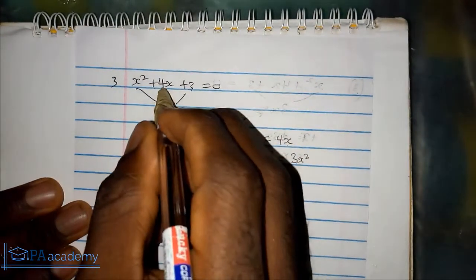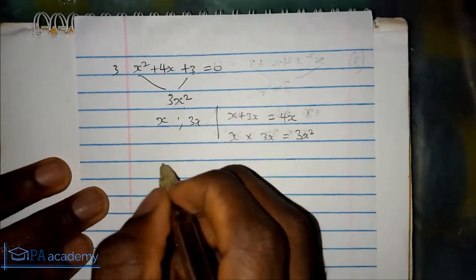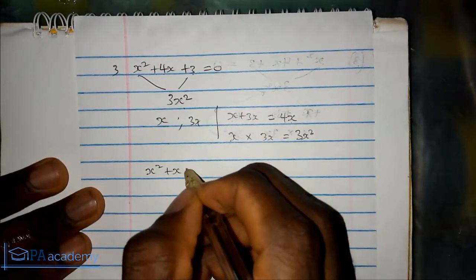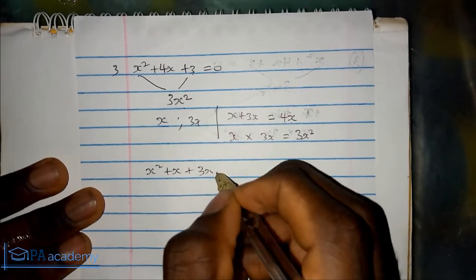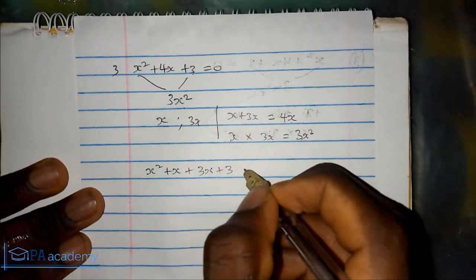So we replace it with 4x. Our equation now becomes x squared plus x plus 3x plus 3 equals 0.